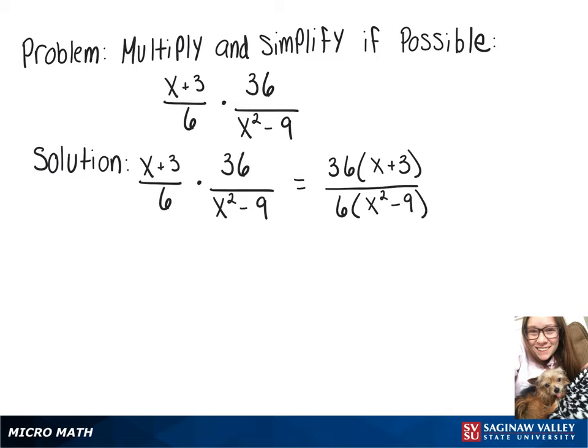So now we just have one fraction that we're working with. And I'm going to rewrite the top as 6 times 6 times x plus 3 over 6 times, that's a difference of squares, so we can rewrite it as x plus 3 times x minus 3.